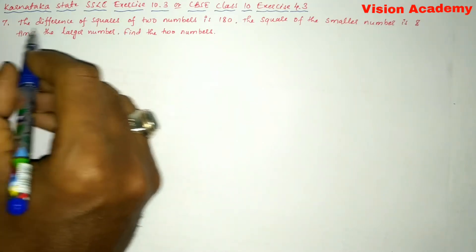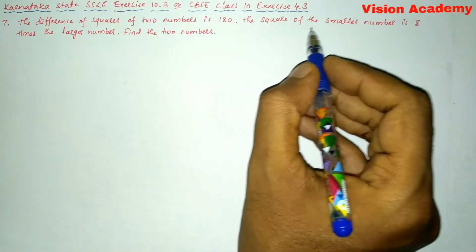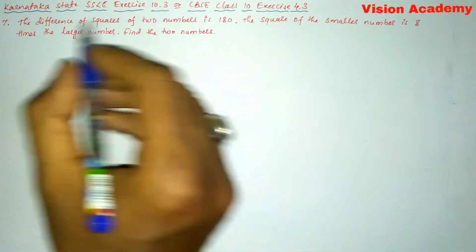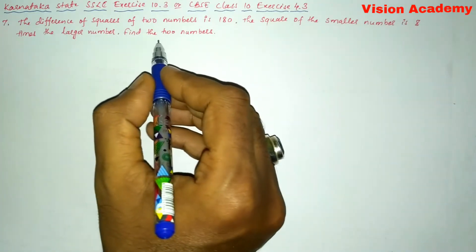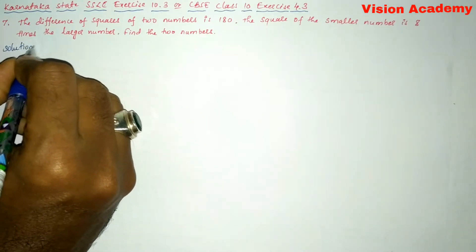Question number seven: the difference of squares of two numbers is 180. The square of the smaller number is eight times the larger number. Find the two numbers. Let us find the solution for the given problem.